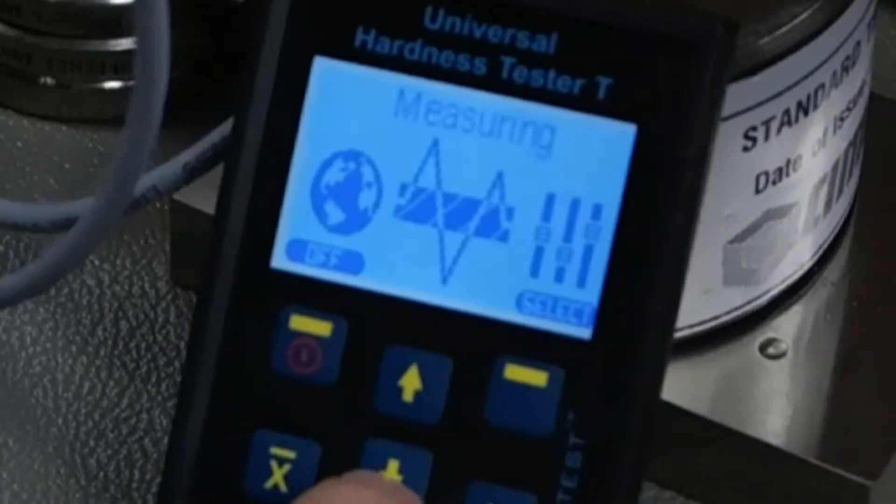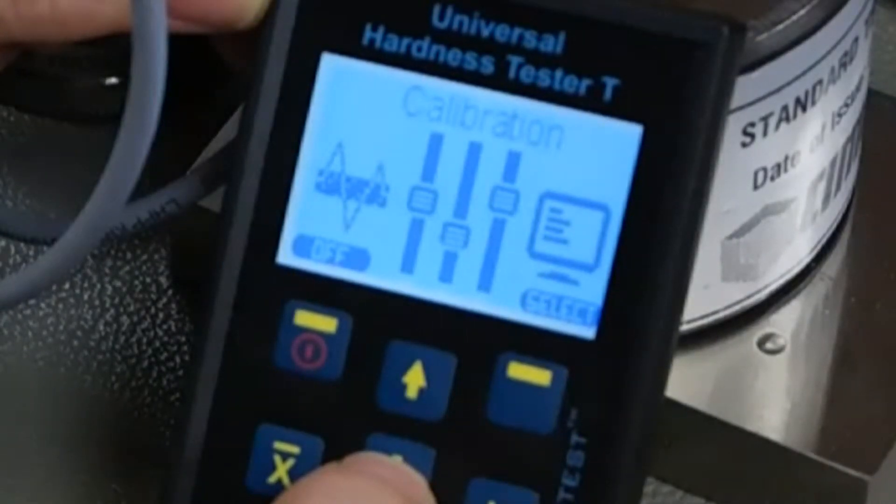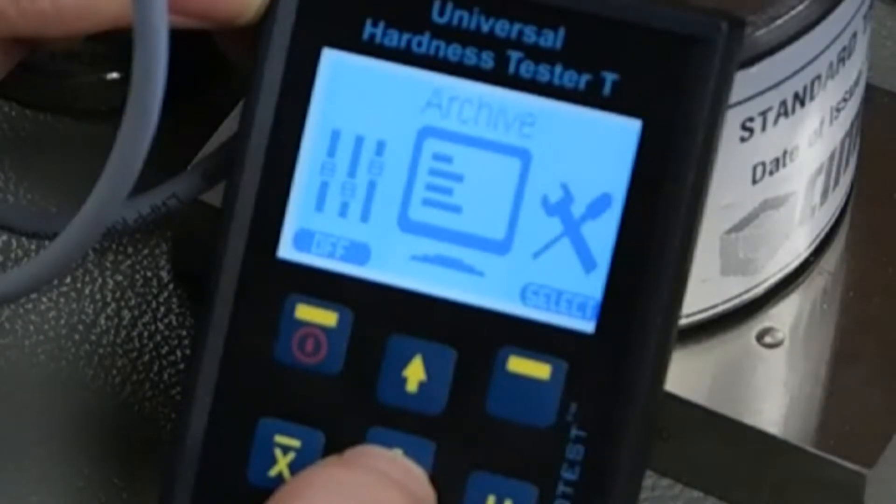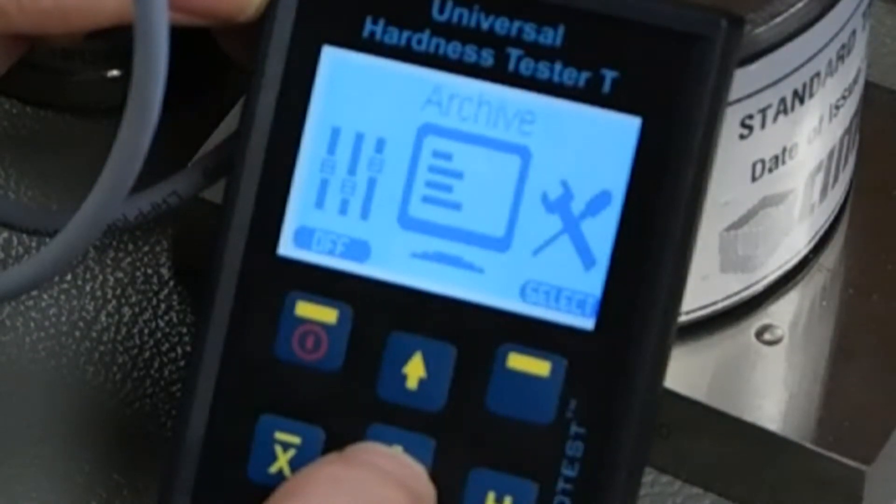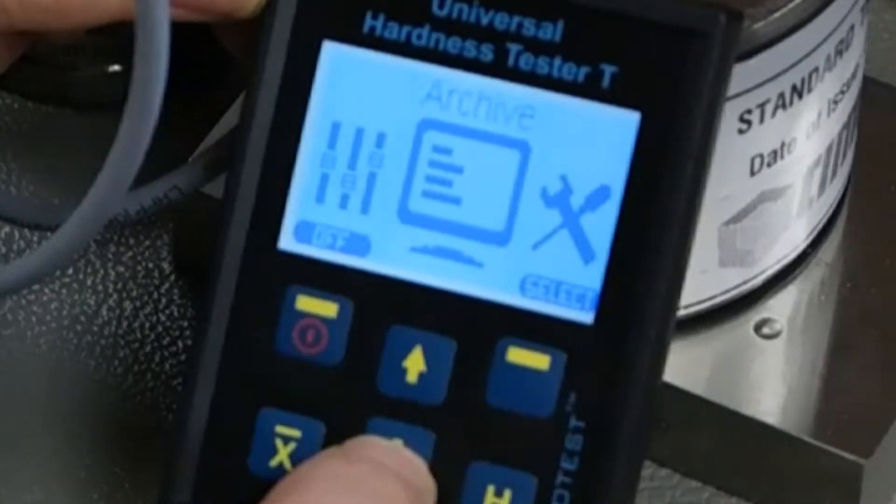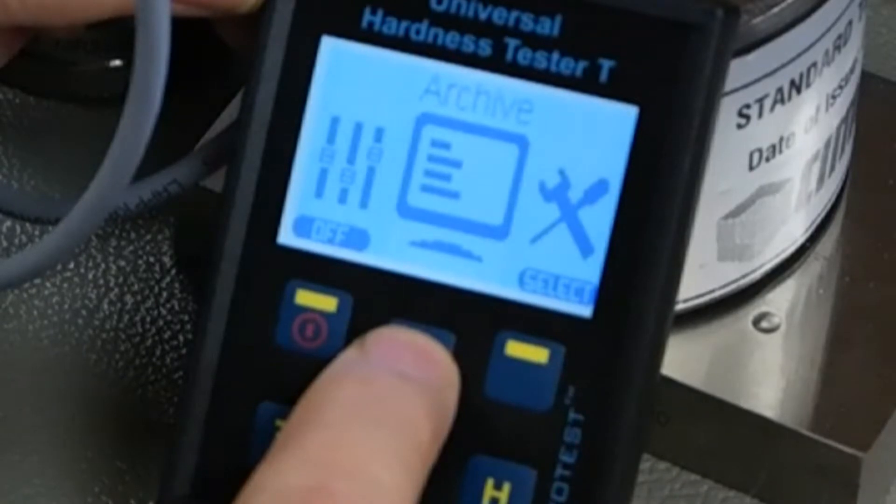Within the display, if I scroll through, we're on measuring right now. There's calibration to calibrate the unit for different materials. Archiving is the place that you store the tests and you can recall those later for review, or it's from there that we would upload the tests to the PC.